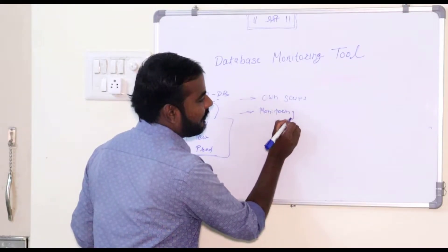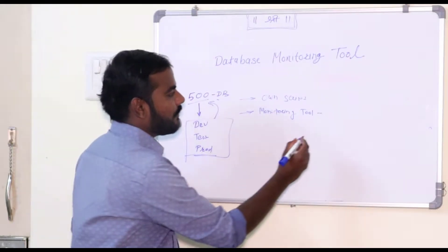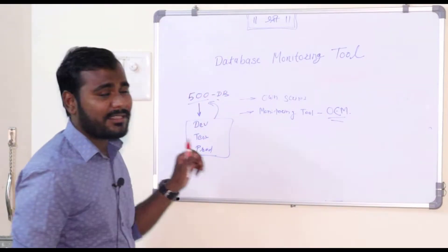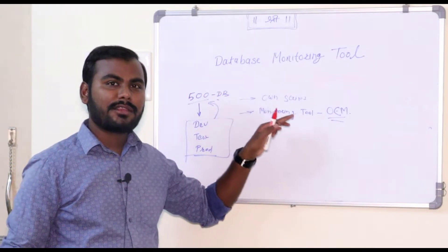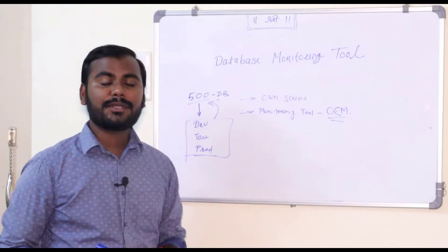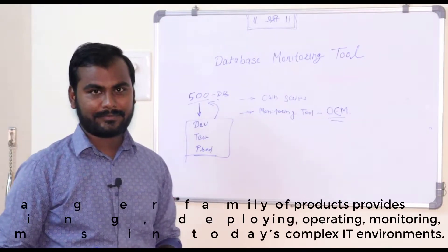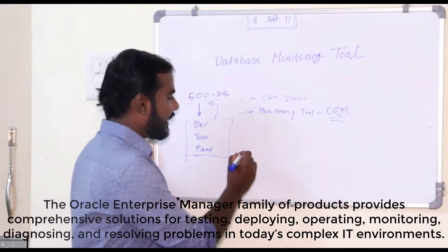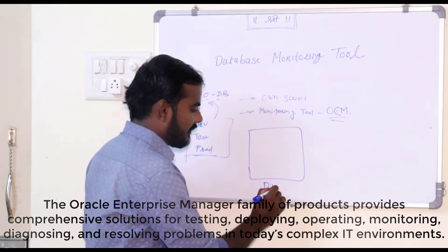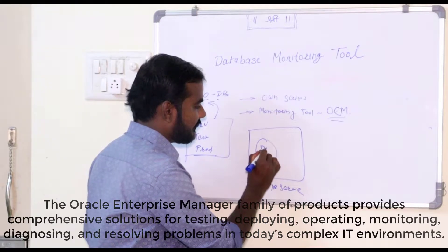For Oracle databases, we can use OEM — Oracle Enterprise Manager. This is one of the best monitoring tools for Oracle databases, provided by Oracle itself. With this video, we will try to understand what all things can be done with the help of OEM. Basically, in Oracle Enterprise Manager we have the database server, and on top of this database server we have our Oracle database.